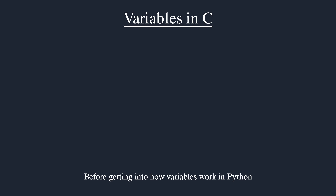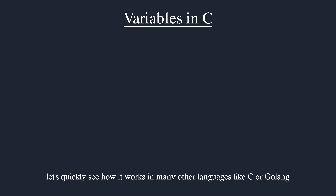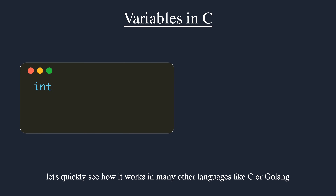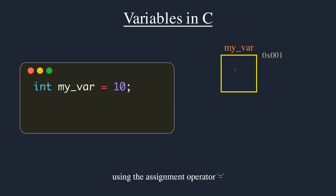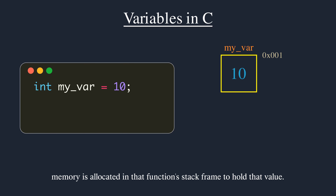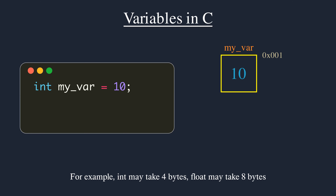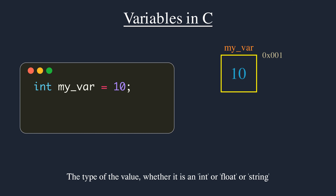Before getting into how variables work in Python, let's quickly see how it works in many other languages like C or Go. You create a new variable and initialize it with a value using the assignment operator, the equal sign. Memory is allocated in that function's stack frame to hold that value. The size of the memory allocation depends on the data type of the variable — for example, an int may take four bytes, a float may take eight bytes.